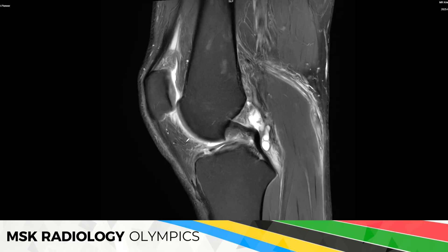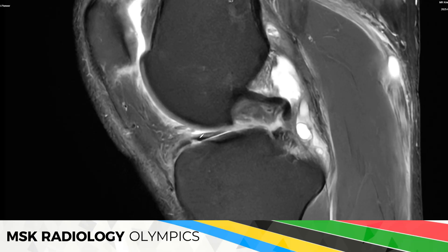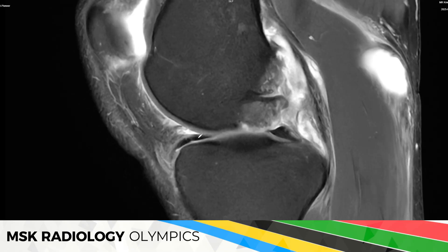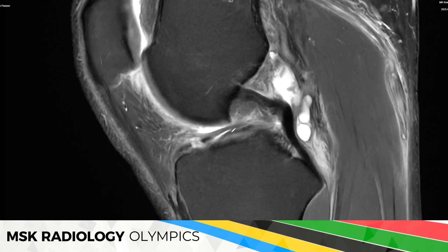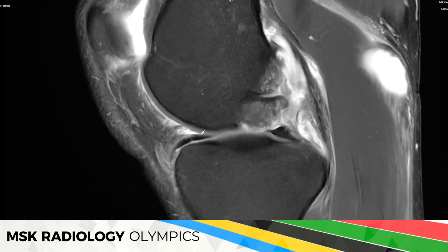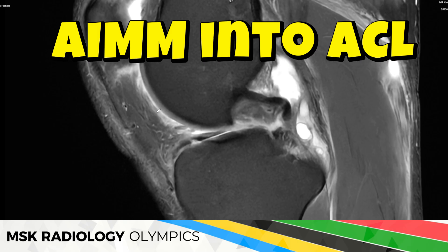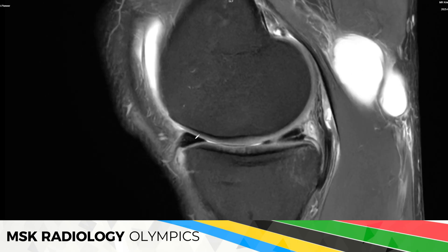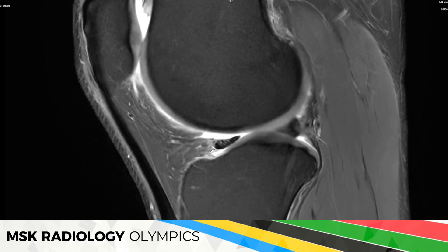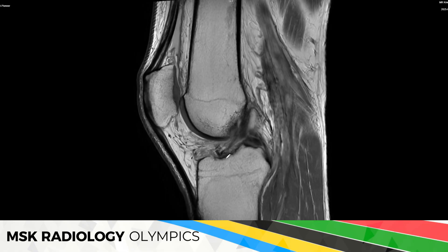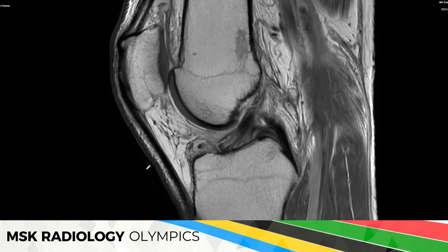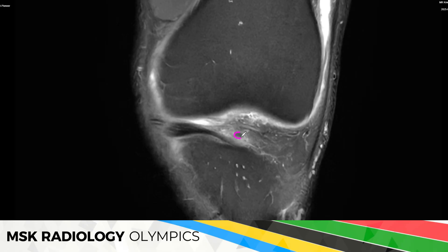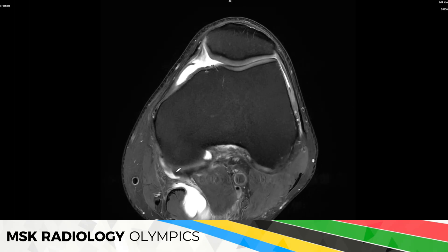There's no bone marrow edema on the femoral side. If you look carefully enough, you can see that the anterior root shows an anomalous insertion into the ACL — there is an additional band. You can see there is an additional string of tissue, one going down and the other seeming to go into the ACL. This is a variant called anomalous insertion of the medial meniscus into the ACL, or AIMM into ACL. It's an anatomic variant, not so rare. We don't see a proper transverse ligament here, and there appears to be a small ossicle or piece of meniscus nearby — perhaps visible on the coronal.